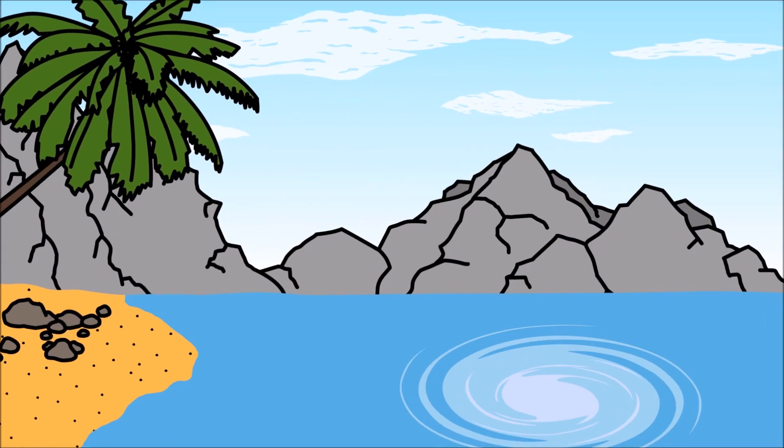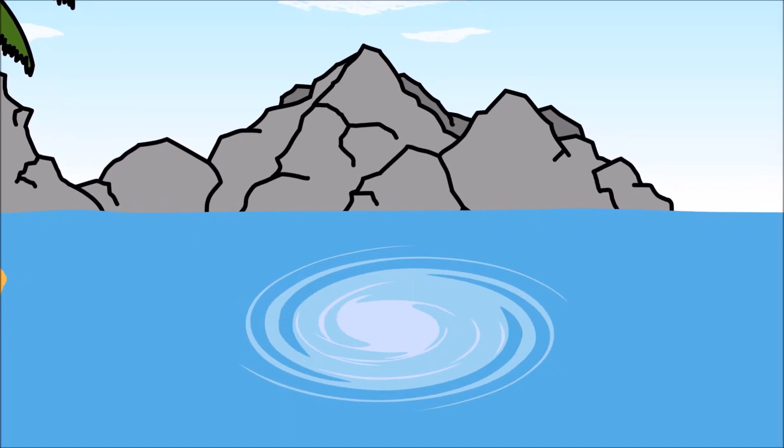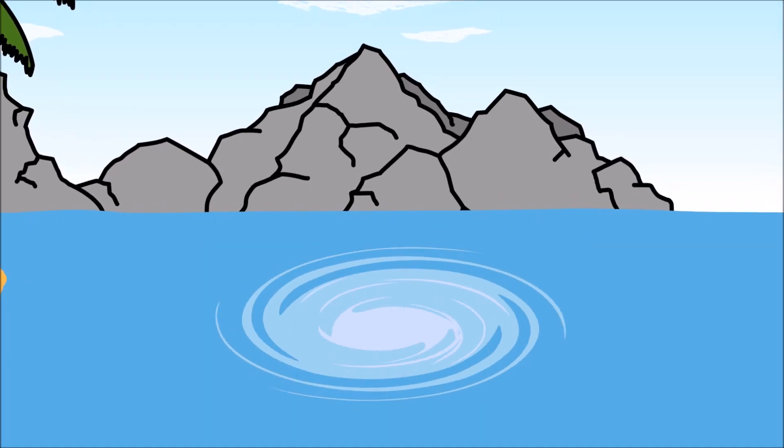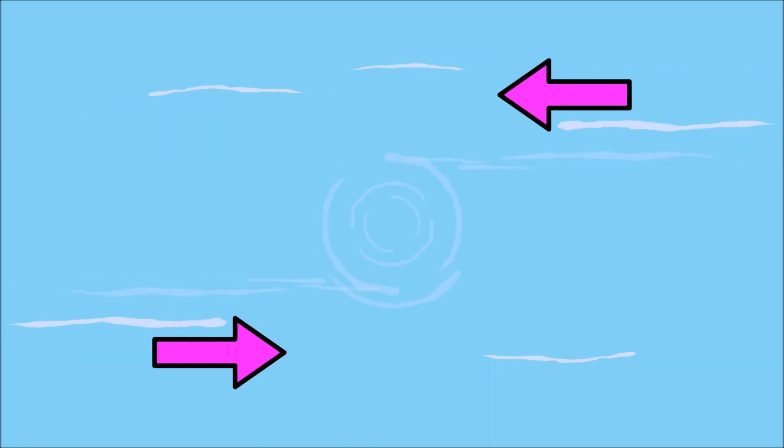A whirlpool is a body of water that spins really fast in a circular motion. Whirlpools happen when currents that are moving in the opposite direction meet each other, causing the water to swirl.